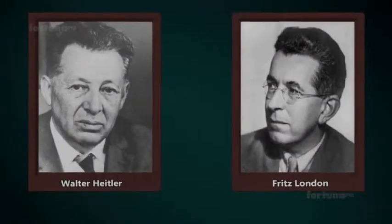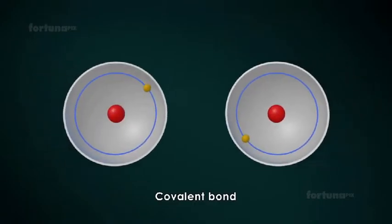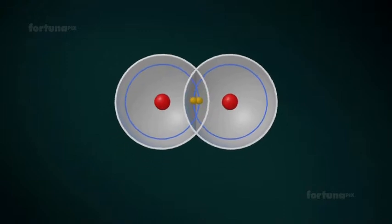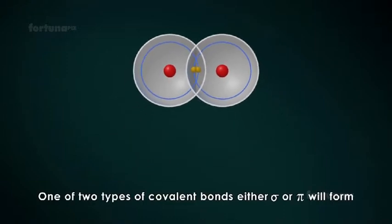Valence Bond Theory was postulated by Heitler and London in 1927. According to the theory, a covalent bond will be formed between two atoms due to the overlapping of half-filled valence atomic orbitals. Due to the overlapping of orbitals, one of two types of covalent bonds, either sigma or pi, will form.